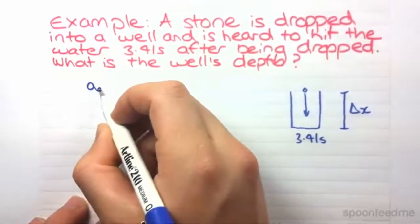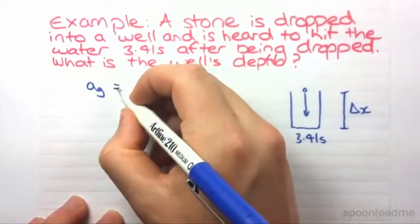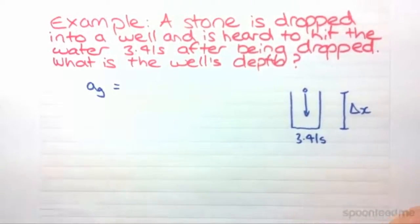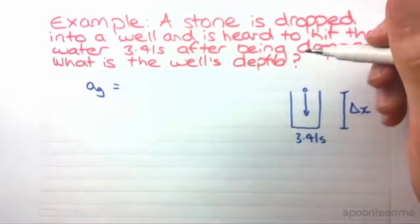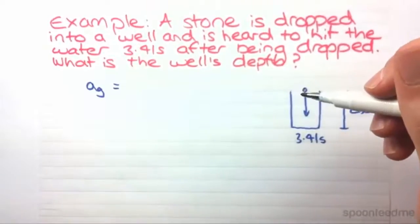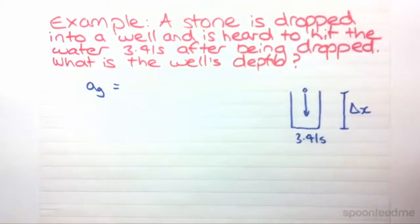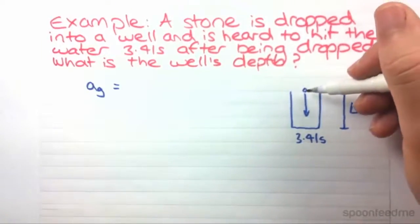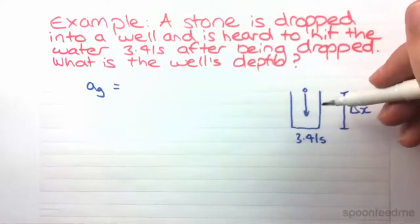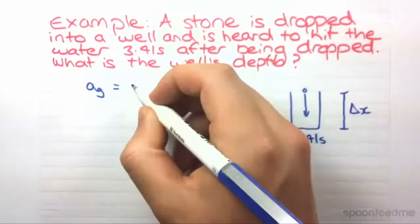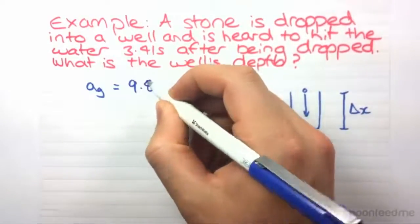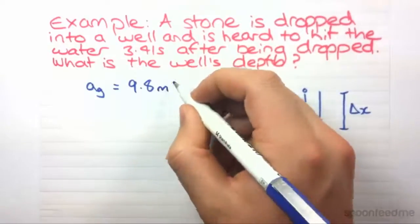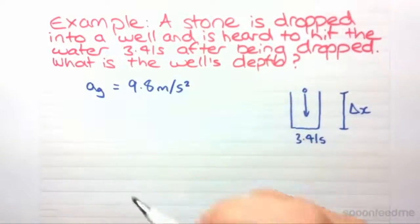The acceleration due to gravity is always 9.8 meters per second squared on Earth, and that is the only force acting on an object in free fall. We're going to write that in there. Acceleration due to gravity is 9.8 meters per second squared. That's something you've got to remember when the question is talking about free fall.